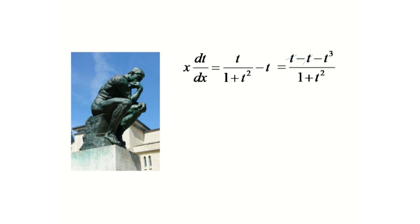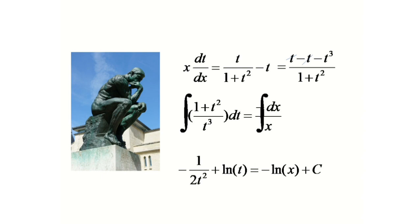And now, if we rearrange some terms, we will get 1 plus t square by t cube dt equals minus dx by x. And if we integrate on both sides, we will get minus 1 upon 2t square plus ln t equals minus ln x plus c.